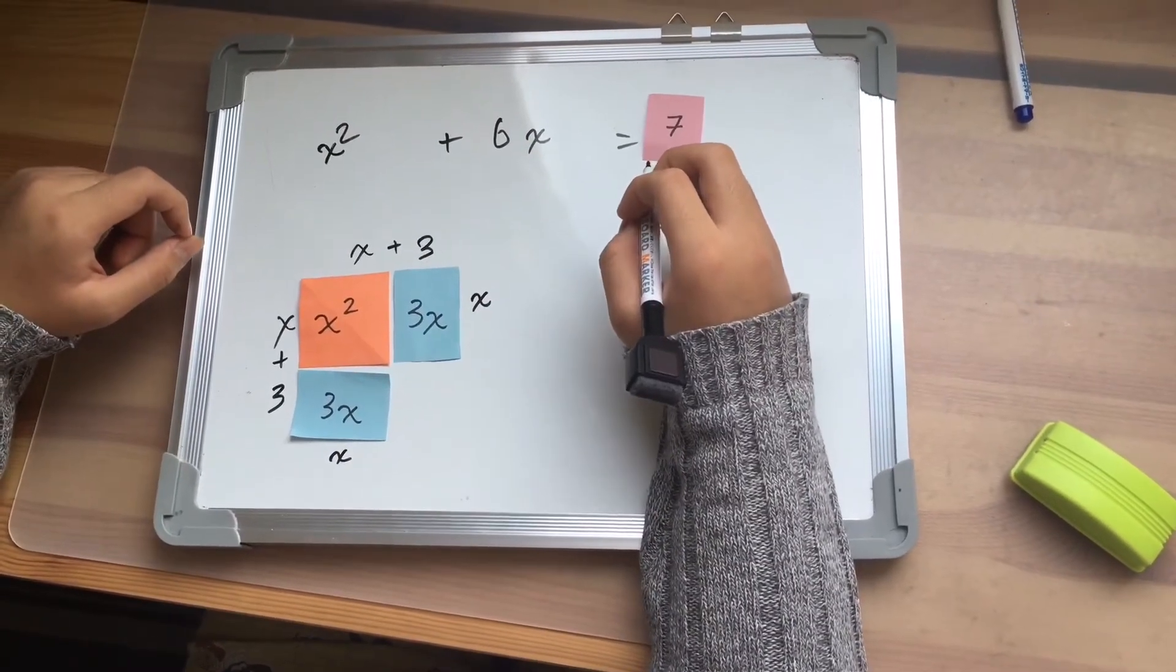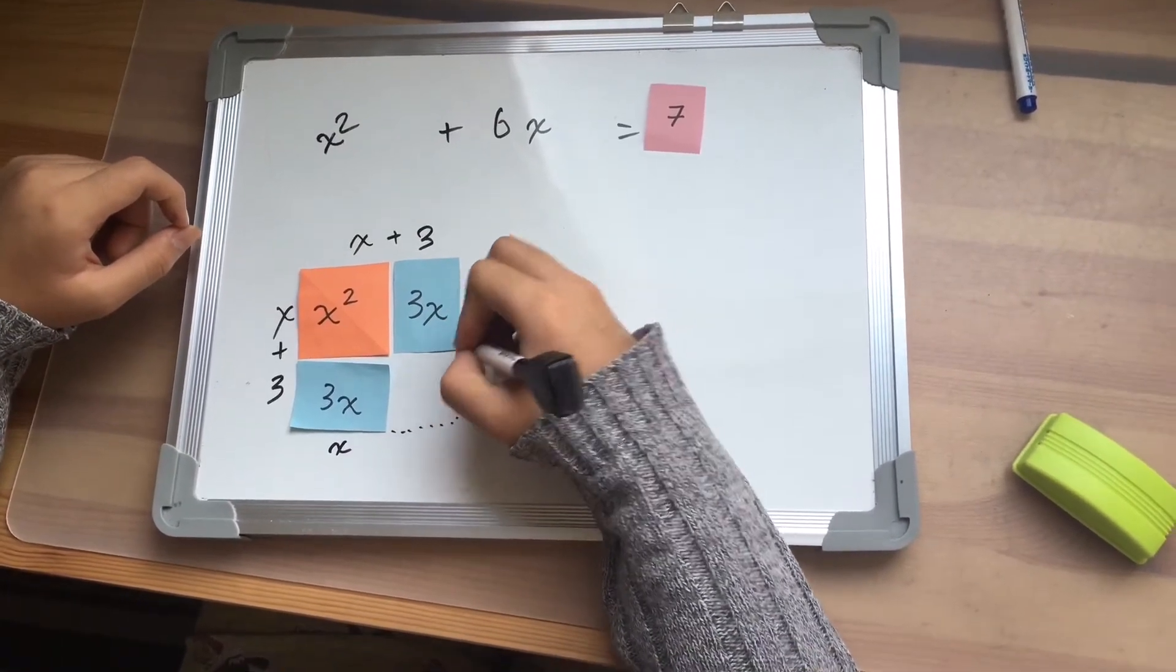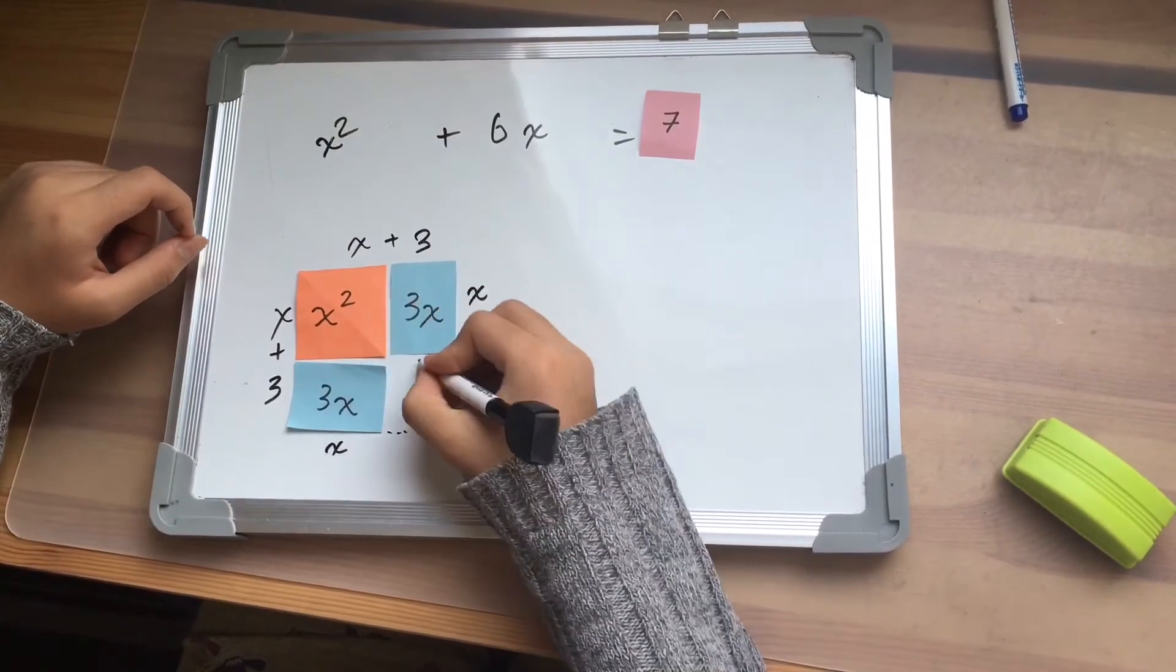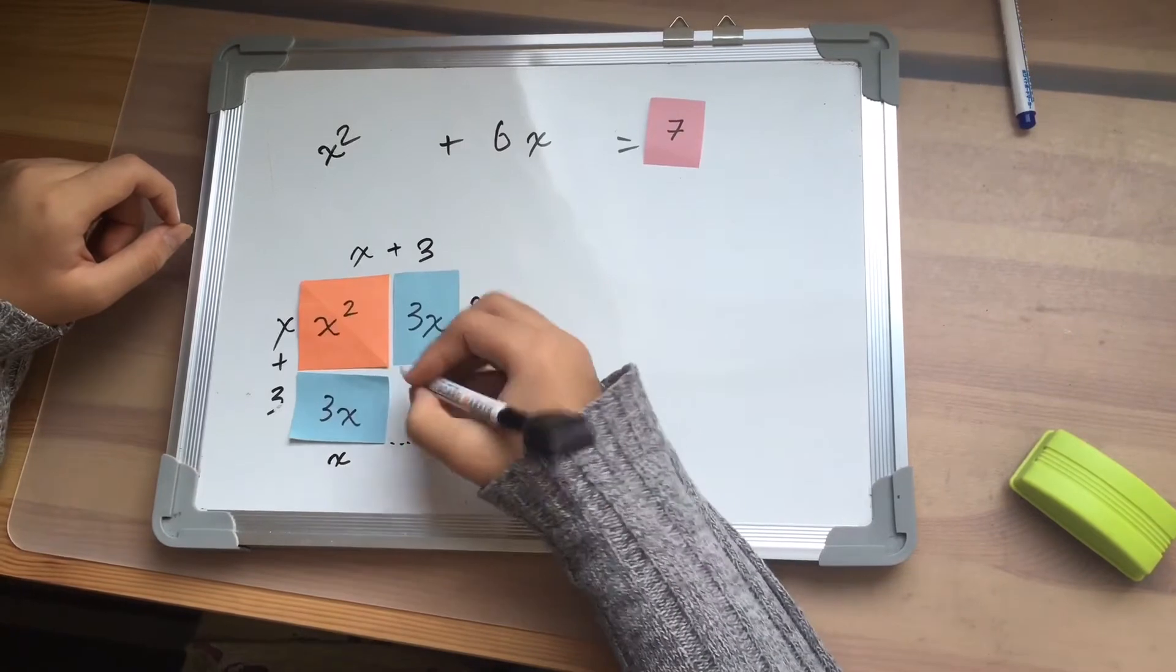To complete the square, we need to find this missing area. We know that this side is 3, so this side should be 3 as well. And because this is 3, this should be 3 as well.